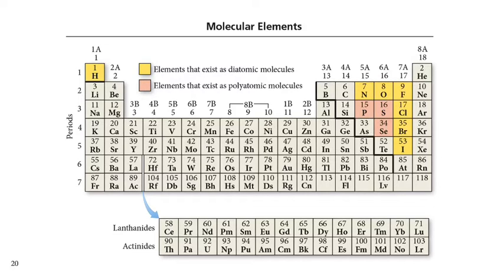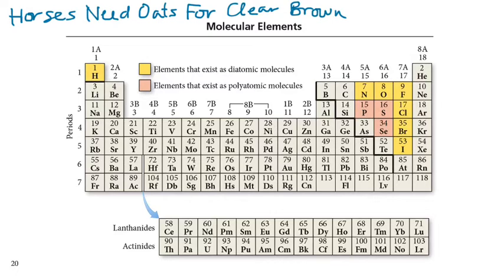Two other ways to remember these guys. One is a silly sentence and one is a made-up word. Horses need oats for clear brown eyes. That's what we call a mnemonic where the first letter of each word represents something.